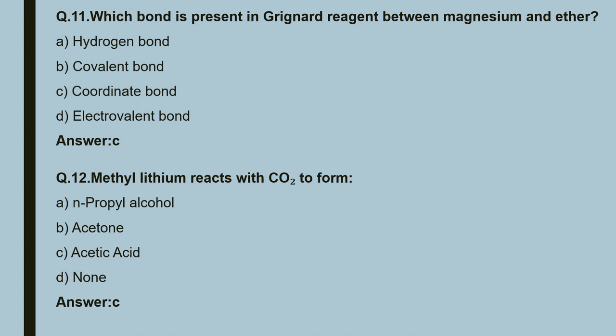Question 11: which bond is present in Grignard reagents between magnesium and ether? There is a coordinate bond between magnesium and ether, so the correct option is C.